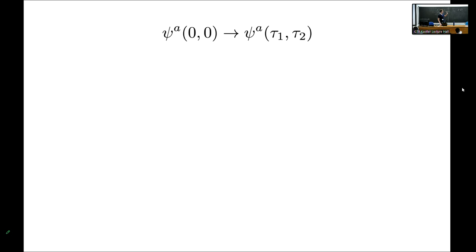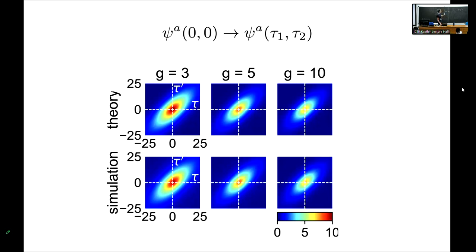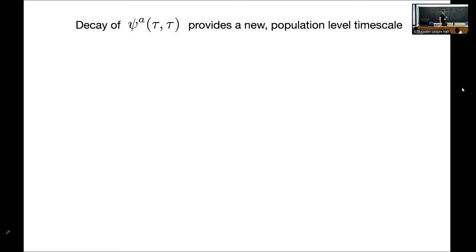I also computed the full tau, tau-prime dependence of the Psi parameter — not just the zero lag value relevant to dimensionality. The theory matches simulations well. More interestingly, looking at the on-diagonal tau-tau slice provides a new population-level timescale based on how quickly it decays. In the same way that the single-neuron two-point function gives single-neuron timescales, this gives the timescales embedded in the correlations between neurons.